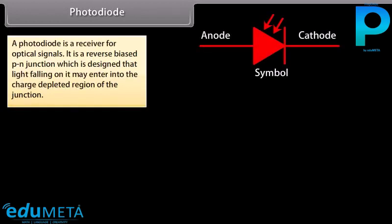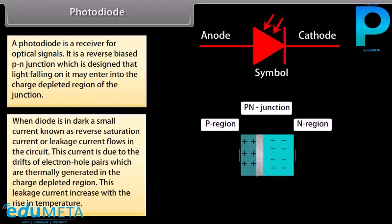A photodiode is a receiver for optical signals. It is a reverse biased P-N junction which is designed so that light falling on it may enter into the charge depleted region of the junction. When the diode is in the dark, a small current known as reverse saturation current or leakage current flows in the circuit.